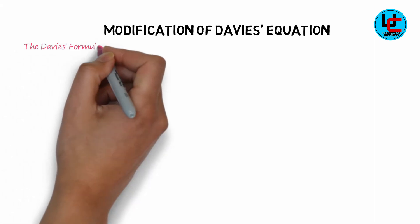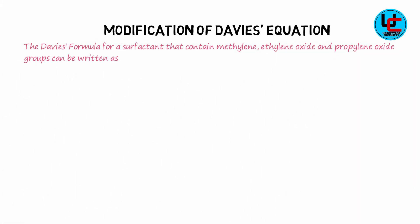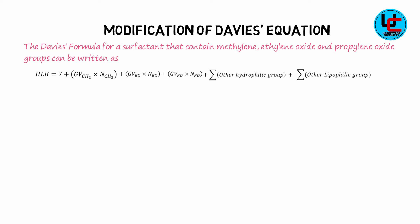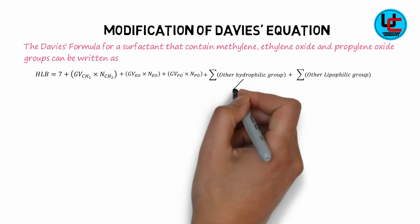For a surfactant that contains methylene group, ethylene oxide, and propylene oxide groups and other groups, the Davies equation could be written in the extended form as HLB is equal to 7 plus group value of methylene group multiplied by number of methylene groups, plus group value of ethylene oxide into number of ethylene oxide, plus group value of propylene oxide into number of propylene oxide units, plus other hydrophilic groups and sum of all other lipophilic groups.